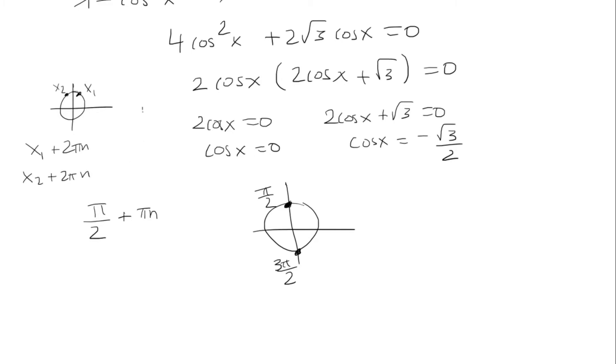But if there are two away, like it could be the first and the third, you could just say x1 plus pi n. So that's a nice little shortcut. Okay, so that's the first solution for cosine equal to 0.